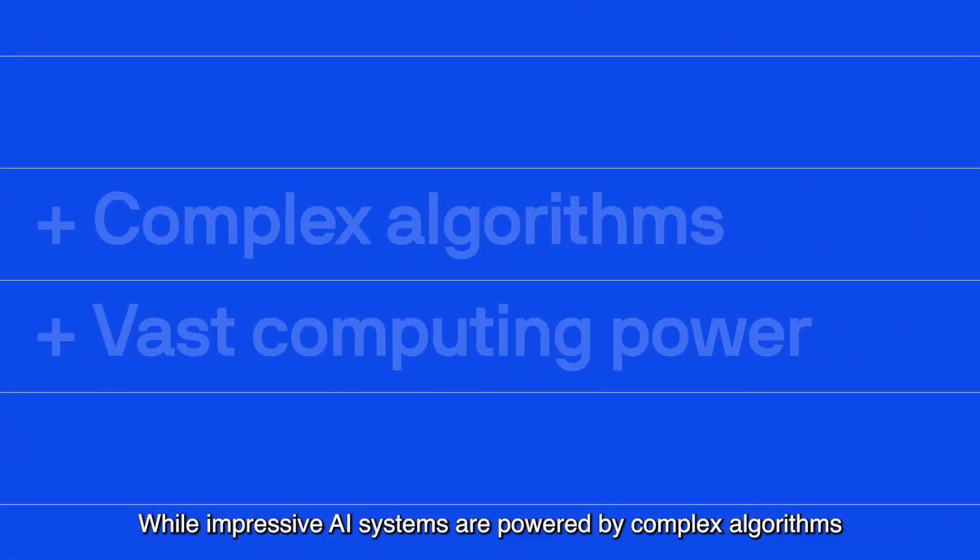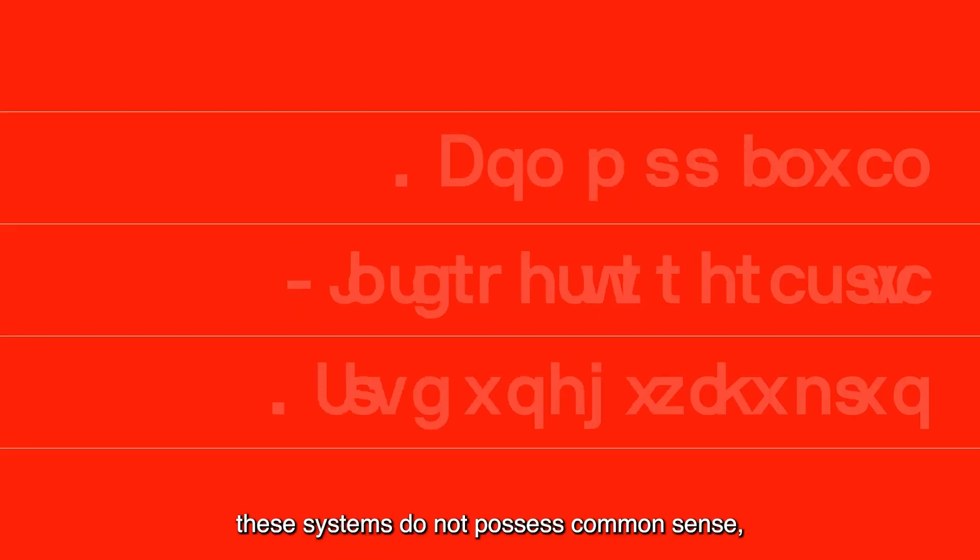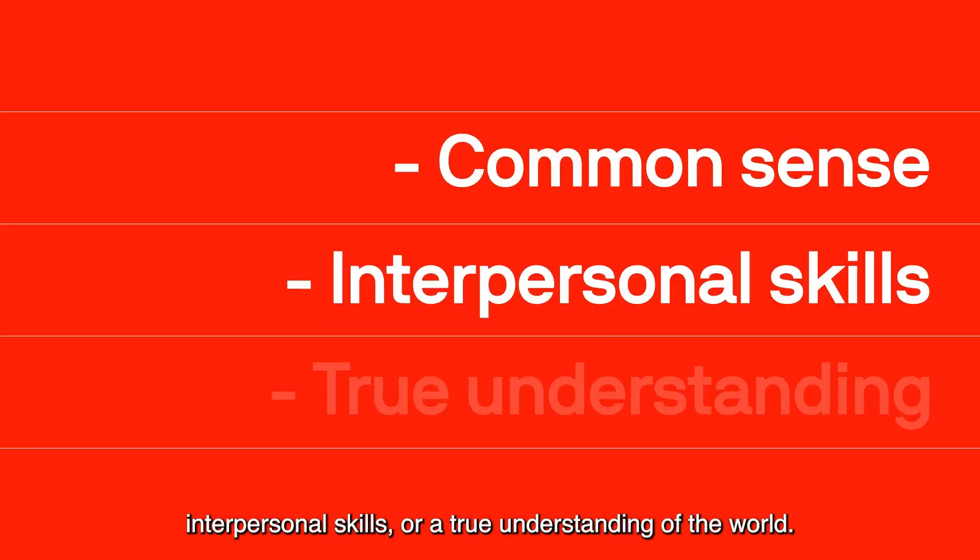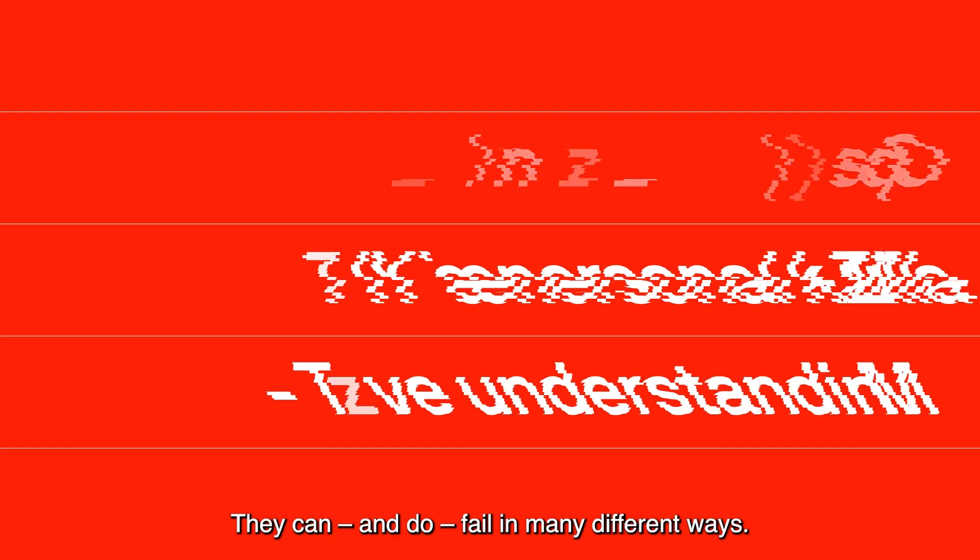While impressive, AI systems are powered by complex algorithms and vast amounts of computing power. These systems do not possess common sense, interpersonal skills or a true understanding of the world. They can, and do, fail in many different ways.